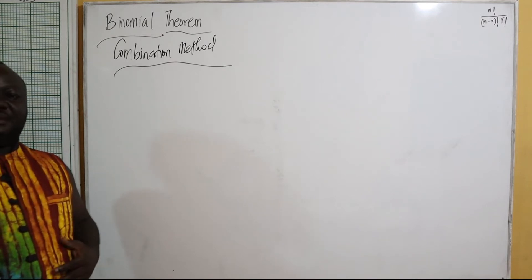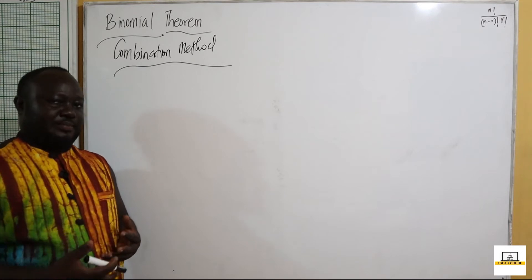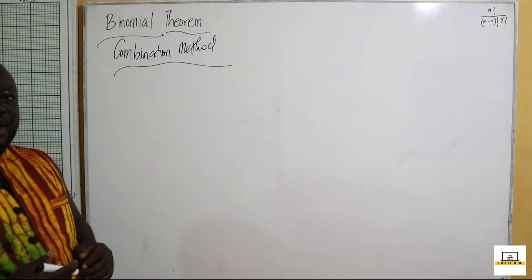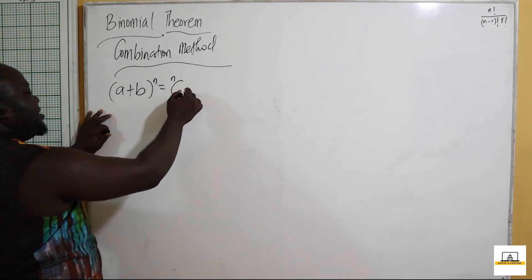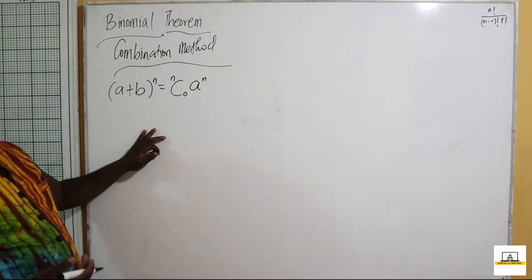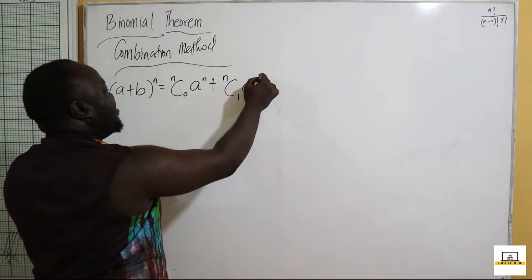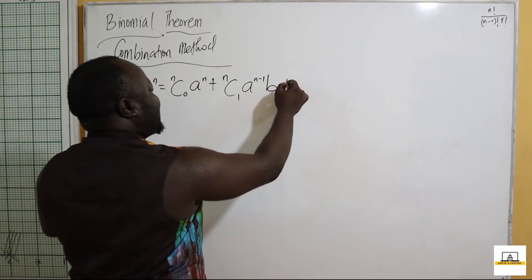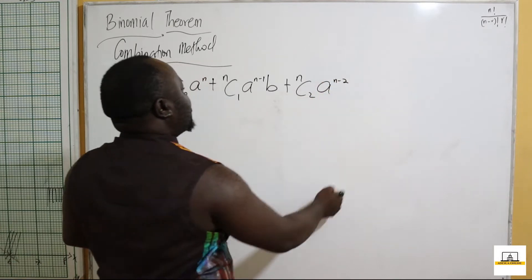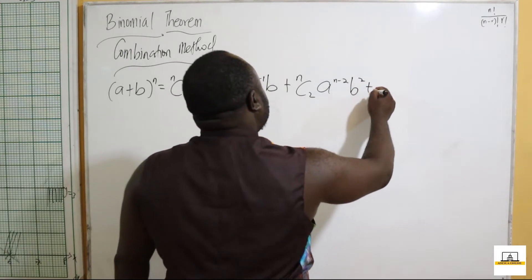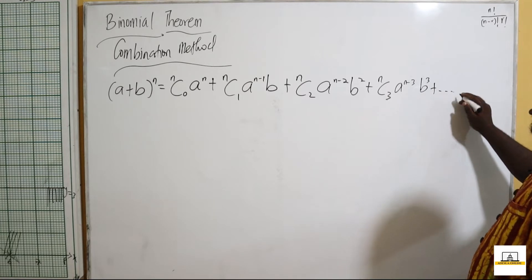The combination method for binomial expansions works as follows: if I have (a + b) raised to the power n, this becomes n combination 0 times a raised to the power n — and n combination 0 gives us 1 — plus n combination 1 times a raised to the power n minus 1 times b, plus n combination 2 times a raised to the power n minus 2 times b squared, plus n combination 3 times a raised to the power n minus 3 times b raised to the power 3, and so it continues.